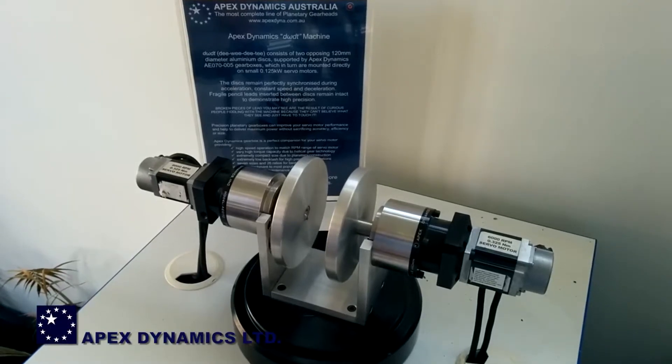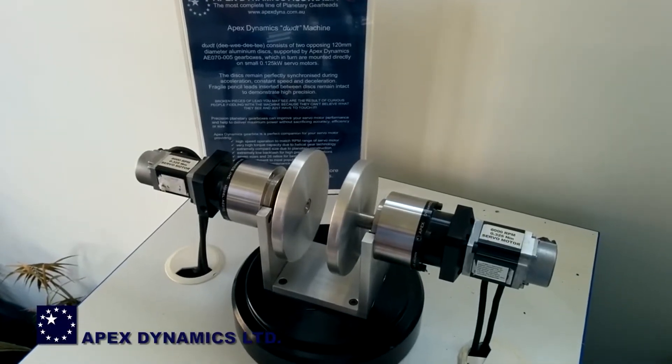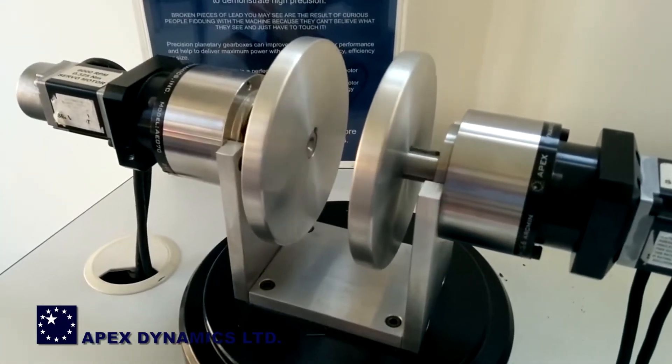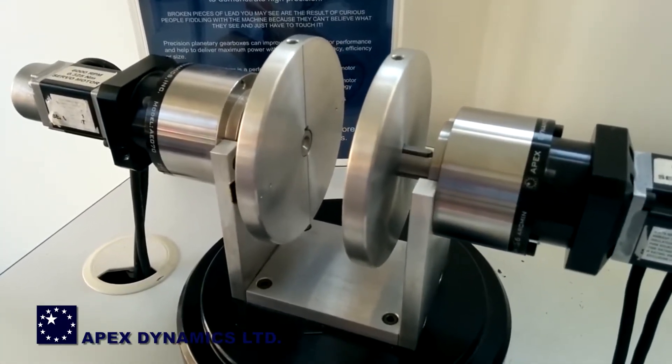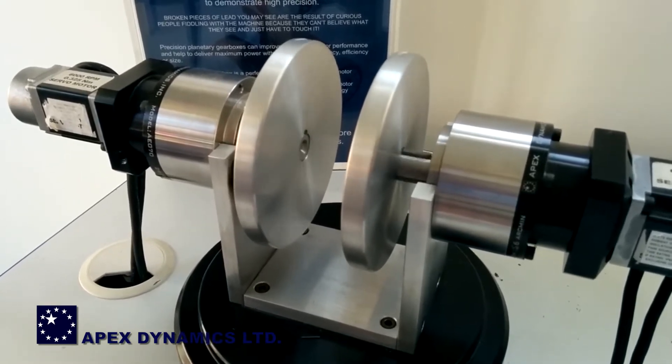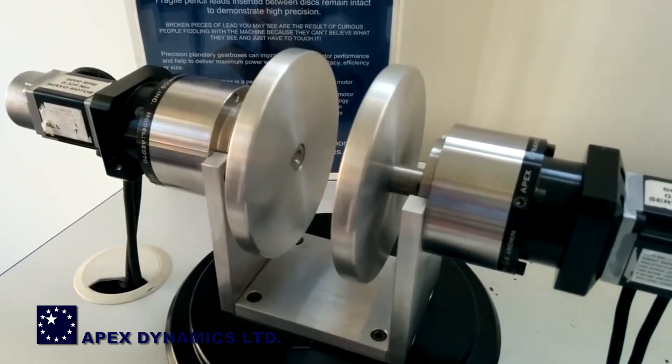Here we have a demonstration of the extremely low backlash performance and precision repeatability of Apex Dynamics planetary gearboxes. We have two aluminum discs mounted via type AE gearboxes to servo motors controlled in a counter-rotating configuration.